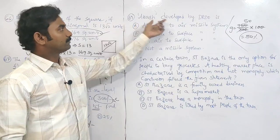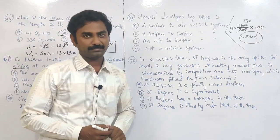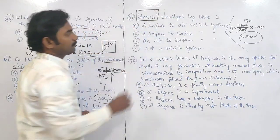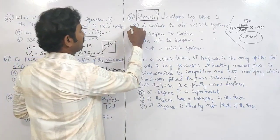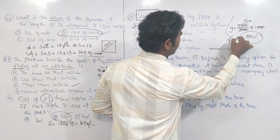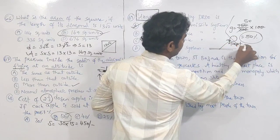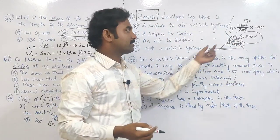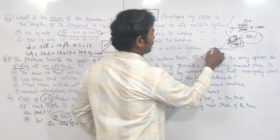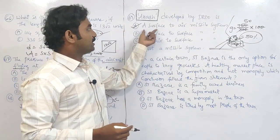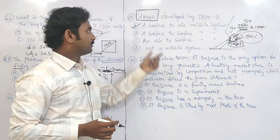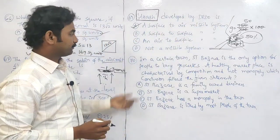Question 69 is related to general science: DRDO Akash — what is it? Akash is a missile developed by DRDO. It is a surface-to-air missile — targeting objects coming from other countries. Akash is developed by DRDO to target objects coming from other countries; it is a surface-to-air missile system.